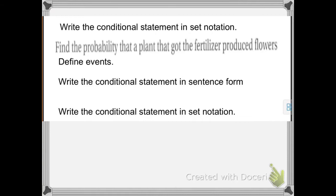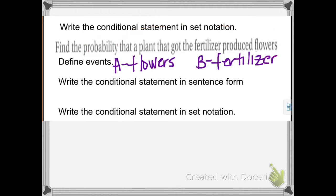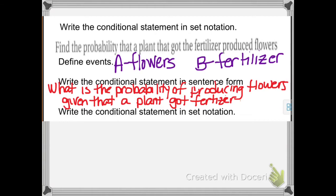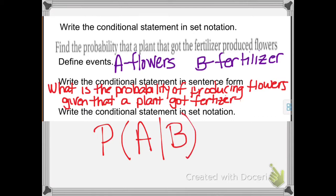Let's try another one. Find the probability that a plant that got fertilizer produces flowers. I want to find the probability that they produce flowers. With A as flowers and B as fertilizer, the conditional statement is: what is the probability of producing flowers given that a plant got fertilizer? In set notation, that is P of A given B — probability of producing flowers (event A) given that the plant got fertilizer (event B).